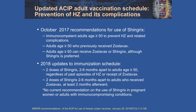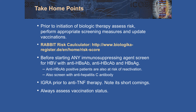My take-home points: prior to initiation of biologic therapy, assess risk and screen, particularly for hepatitis B and latent TB. Don't forget to reassess vaccinations at every visit — are your patients up to date? Remember the RABIT Risk Calculator and think about using it with your patients in clinic. Before starting any immunosuppression, screen for hepatitis B and hepatitis C. Check a QuantiFERON prior to TNF inhibitor therapy and note its shortcomings, in particular indeterminate results. Always assess vaccination status and give your patient their yearly flu shot.